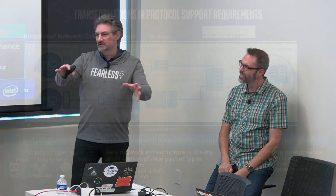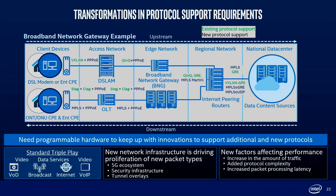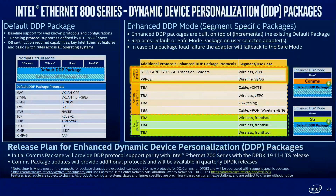With 5G and new protocols and new definitions — that's what we want to be able to set up. What we've done with the 800 series is we have a default set of protocols typically found in most networks: the NVO3 tunnels — so NVGRE, GENEVE, VXLAN, VXLAN-GPE — those will all be there by default.